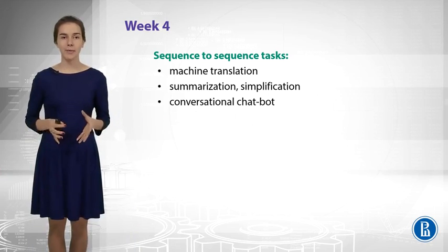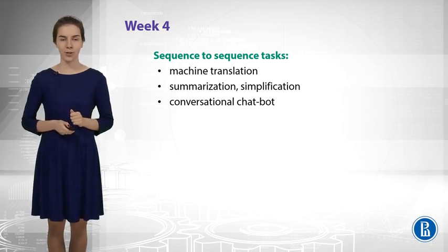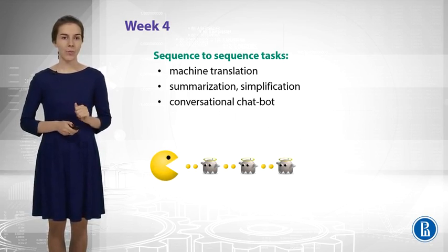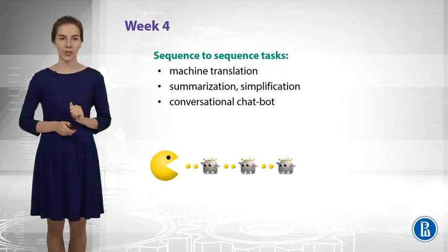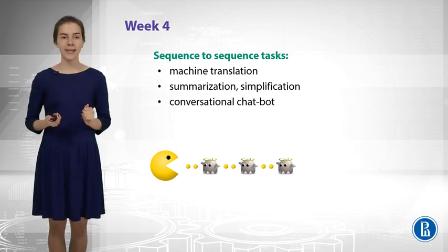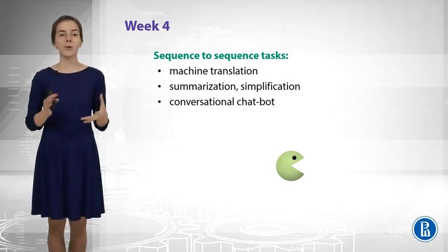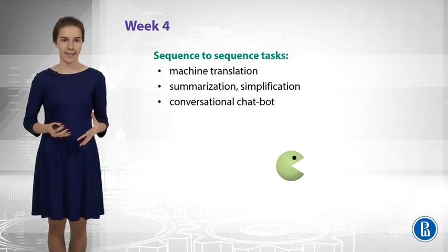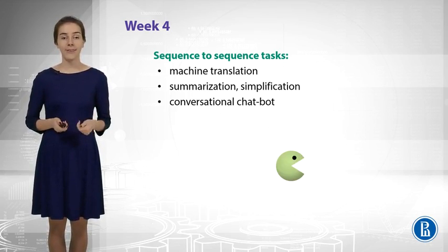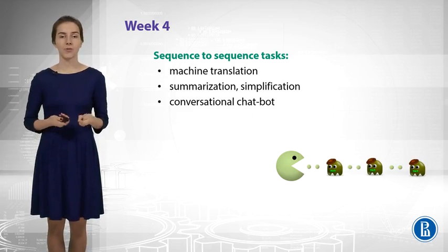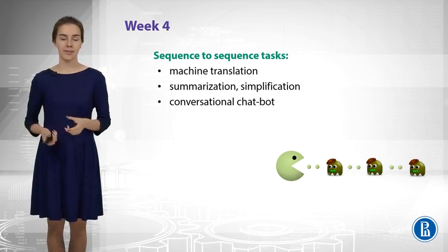All these tasks can be nicely solved with the so-called encoder-decoder architecture in neural networks. We are given a sentence and we feed it to the encoder. What we get is some hidden representation of the input sentence. After that, the decoder generates the output sentence — and this is how we get our final translation, summary, or something else.